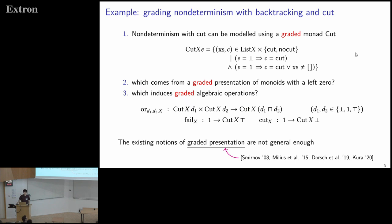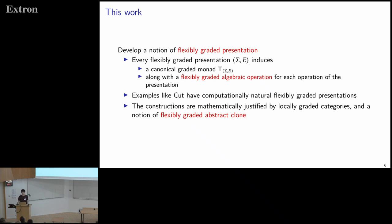To be clear: this graded monad does have a presentation in the existing sense, but we cannot present it in terms of or, fail, and cut. The reason is we want to say that if we apply or to two computations and one has grade bottom — meaning it will cut — then the result should also have grade bottom. But the existing notion of graded presentation restricts that when we apply an operation, all input grades must be the same. So we cannot say: if one input has grade bottom, the result has grade bottom.